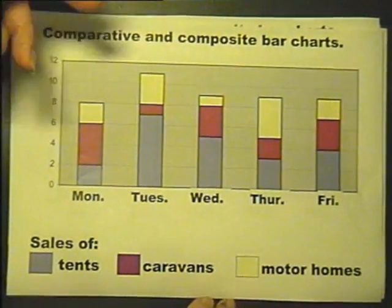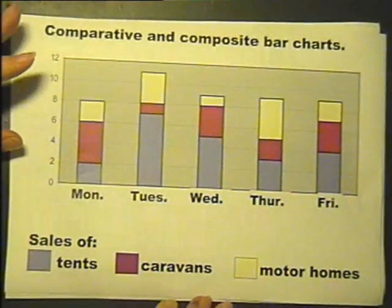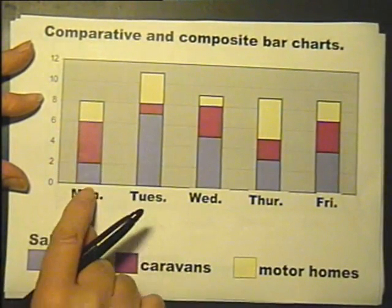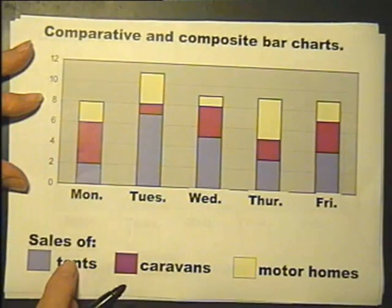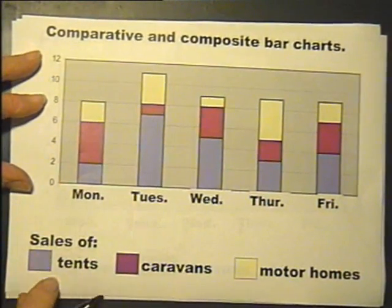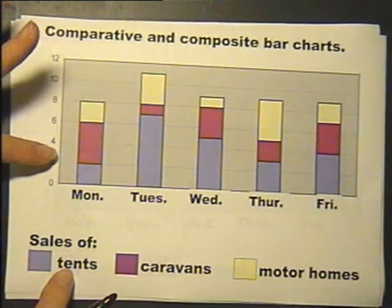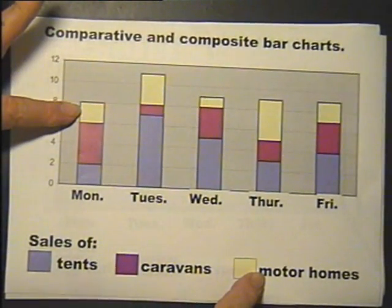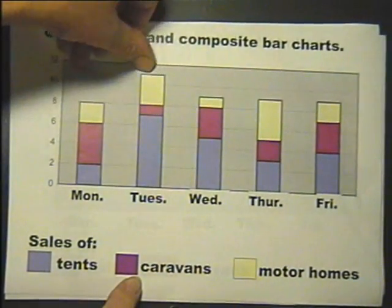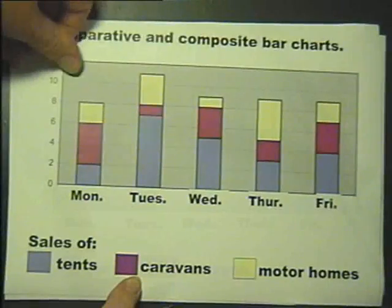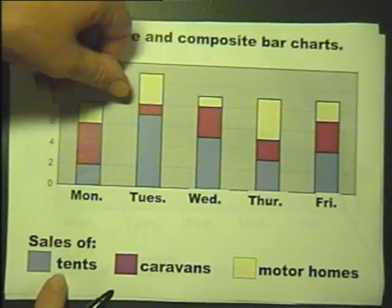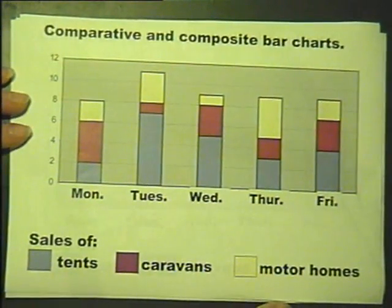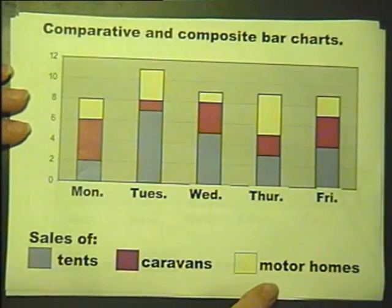Finishing with another composite bar chart — we've got sales of tents, caravans, and motorhomes. On Monday you can see there is a total sales altogether of the three different things of 8. You can read the graph: 2 were tents, and 2 from 6 gives 4 were caravans, and 6 from 8 gives 2 were motorhomes. Tuesday total sales of 11 — of those 7 were tents, 7 from 8 means 1 was a caravan, and 8 from 11 means 3 were motorhomes. I'm going to dare to say that's fairly obvious. So that's bar charts.